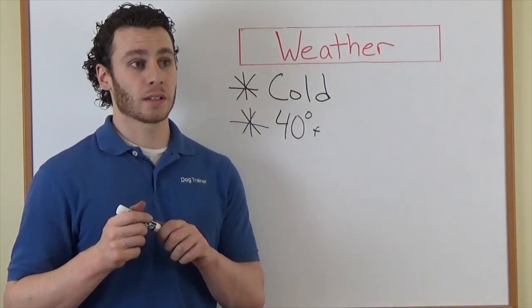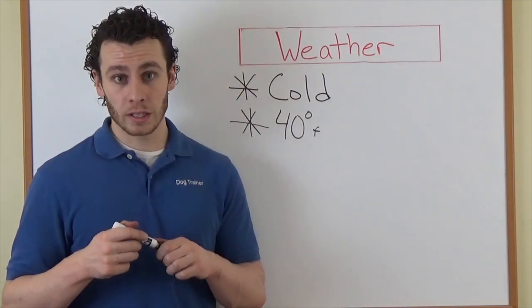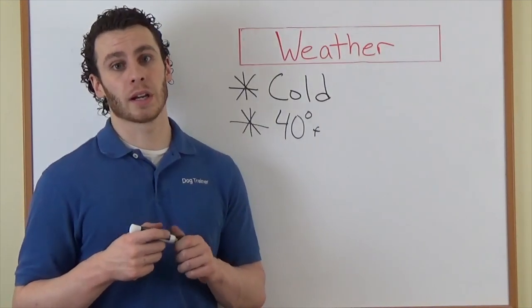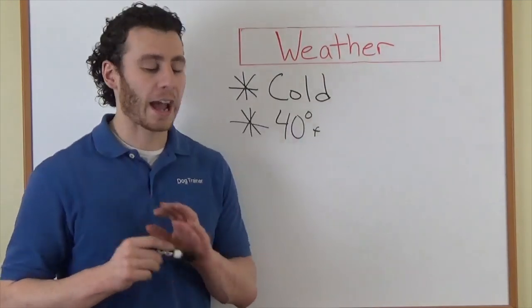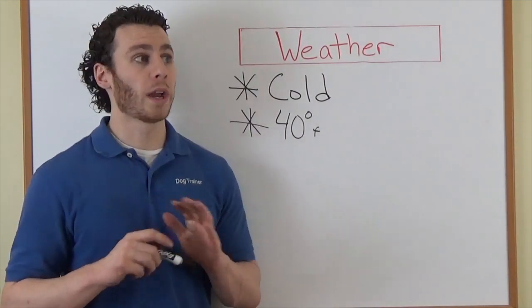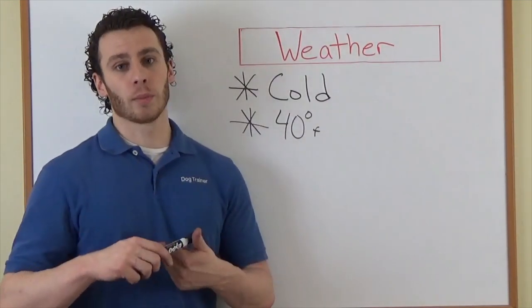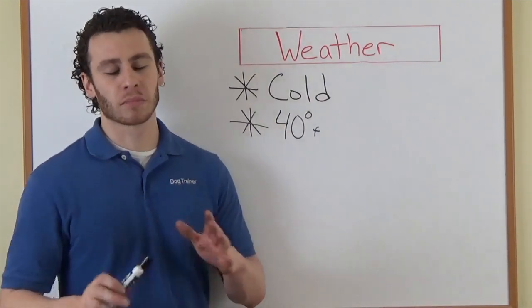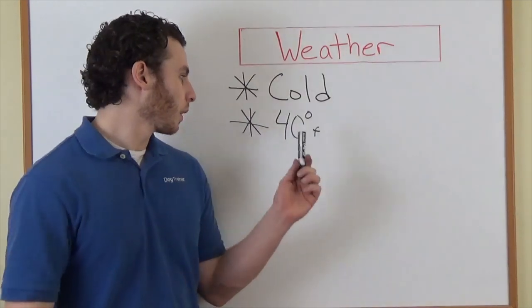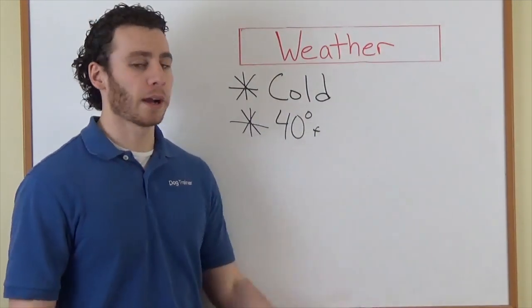When it hits zero and it's freezing, they absolutely must be inside. Anything lower than 40, they probably should be coming inside. Snowing, they absolutely need to be inside. Way too cold for them. They can get hypothermia, get frostbitten. Even if you have a little doghouse for them, that's not enough.